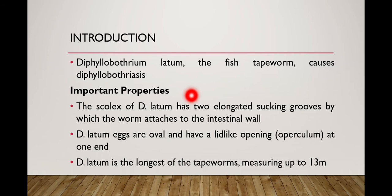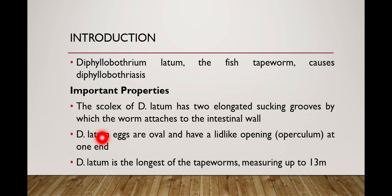There are certain important properties of Diphyllobothrium latum. First, the scolex of D. latum has two elongated sucking grooves by which the worm attaches to the intestinal wall. Since D. latum belongs to the cestode group of Platyhelminthes, other cestodes have four suckers in the scolex, but D. latum contains two sucking grooves, which is in contrast to the other group members.